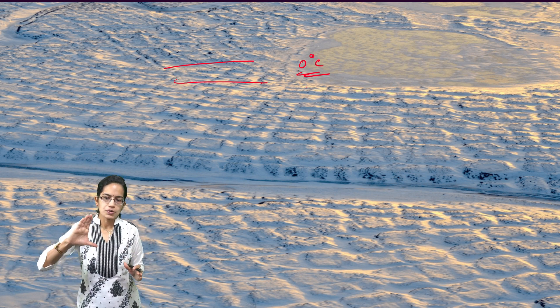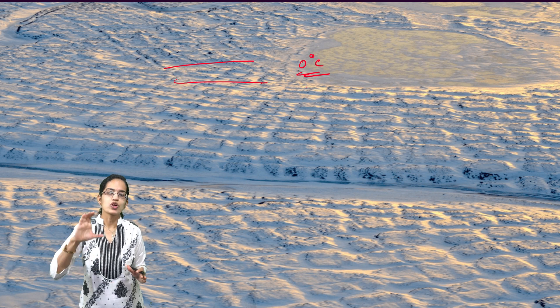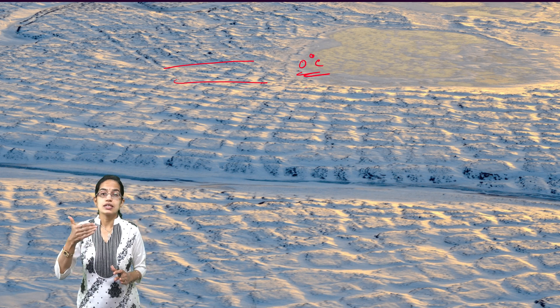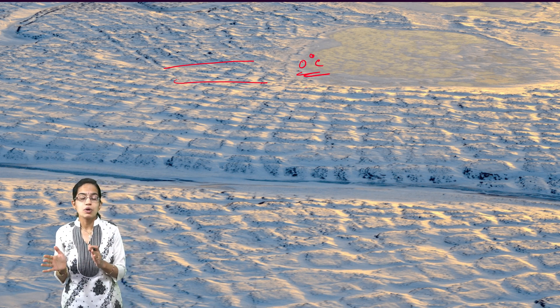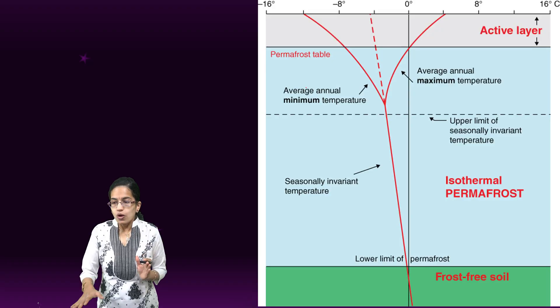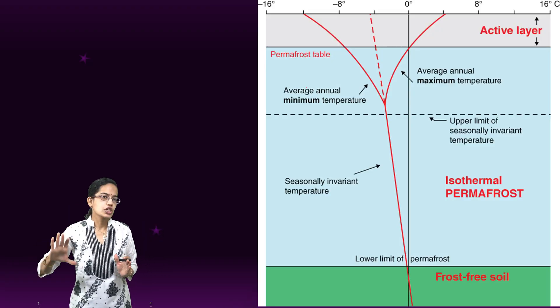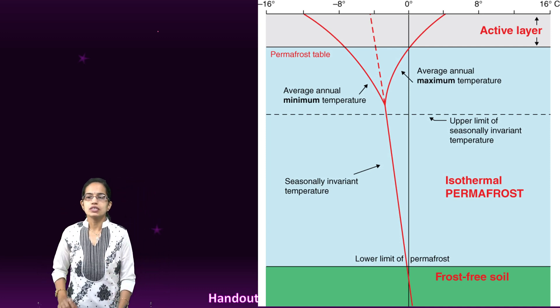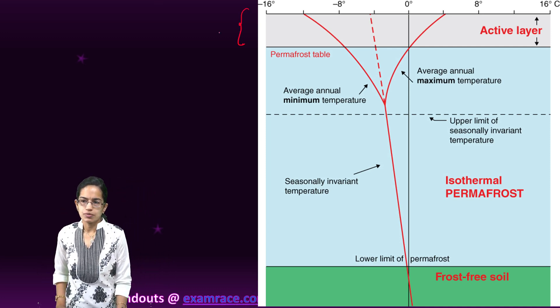How do we understand this permafrost? What are the layers within the permafrost and how we see the development if this permafrost starts to thaw? Let's understand the structure of permafrost. Permafrost has three important sections. The first is the layer of active permafrost.